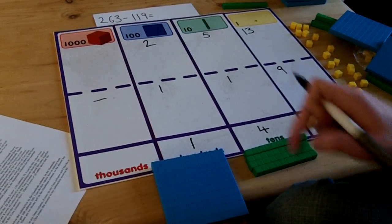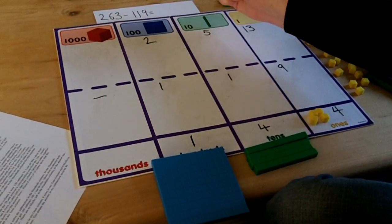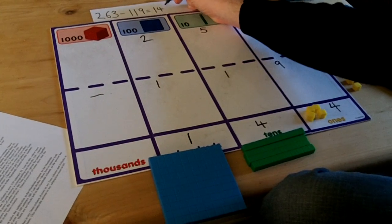This means the answer to my subtraction is 144. So 263 subtract 119 equals 144.